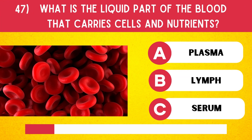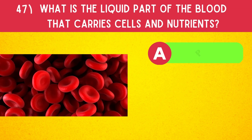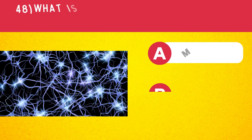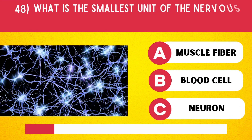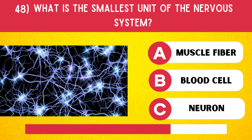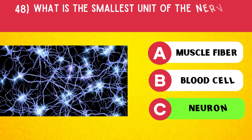What is the liquid part of the blood that carries cells and nutrients? Plasma. What is the smallest unit of the nervous system? Neuron.